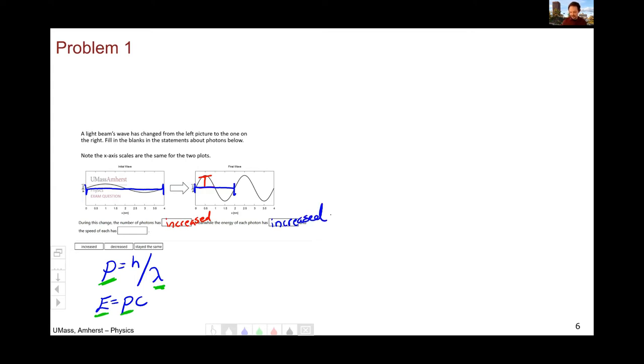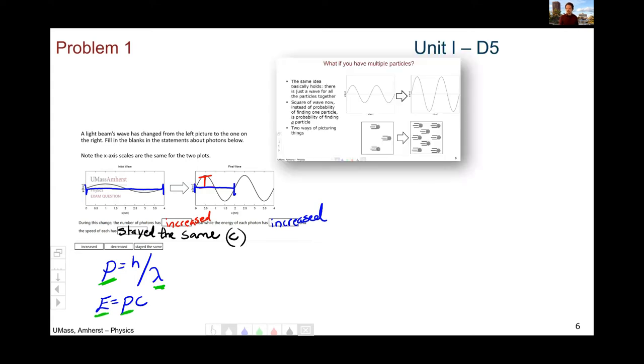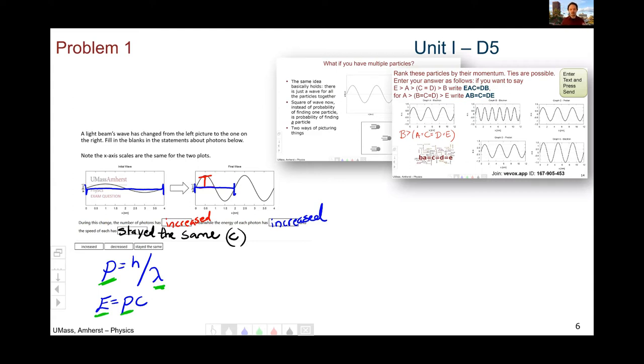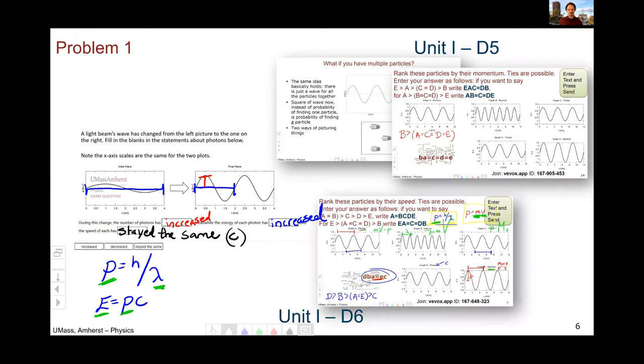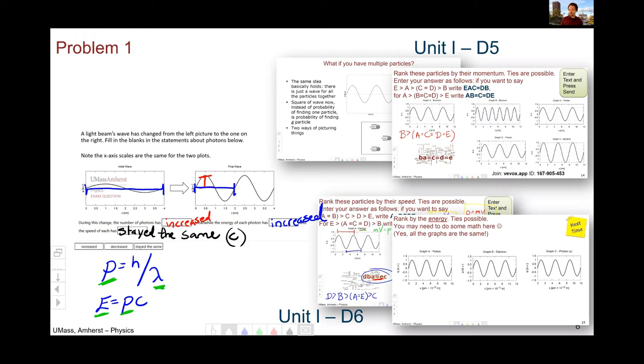And the speed has stayed the same because they're all photons and they are all traveling at the speed of light C. And so since they're all traveling at the speed of light, it must be the same. There was quite a bit of practice with this type of idea in unit one day five, slides nine and 14. I did some ranking where you ranked by number of particles, by momentum. And we had a clicker question about the number of particles. And then there was an explicit question about photon speed and how they're all traveling at C on unit one day six, slide seven. And then there was a nice next time problem at the end of day six, where I asked you to rank by energy, a proton, an electron and a photon. So these are some of the problems that really should have prepared you for this particular exam question.